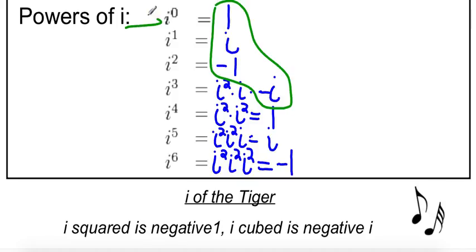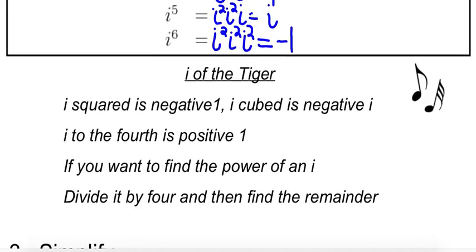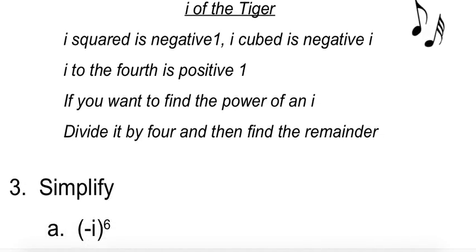I know that you know these already. It's the i cubed that you have to remember. i cubed is negative i. So there's a fantastic song that I wrote about it. It's called Eye of the Tiger. It goes to the chorus of Eye of the Tiger.